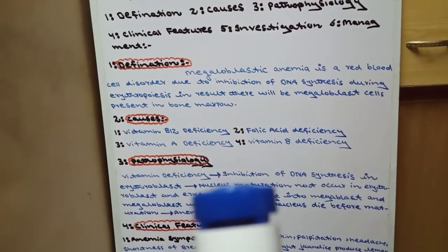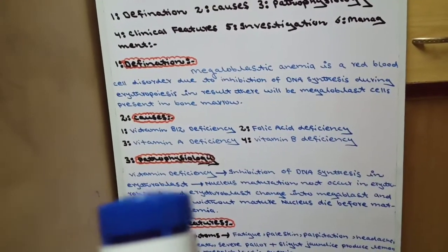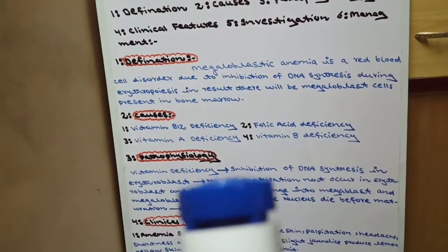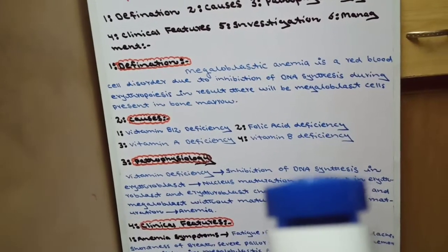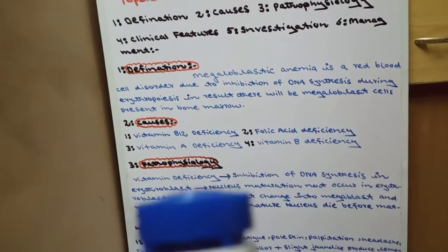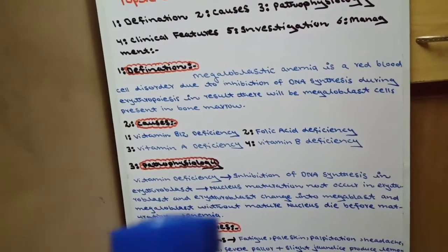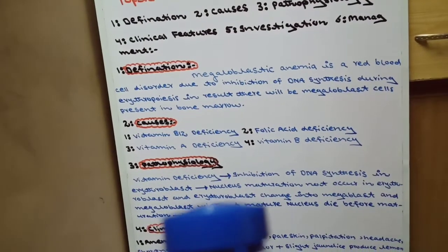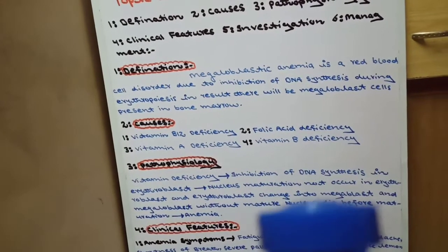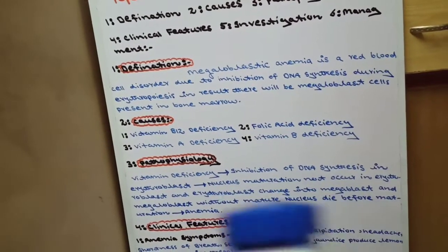Pathophysiology kya hai? In vitamins ki deficiency hoti hai, toh DNA synthesis jo erythroblast ke andar hoti hai — erythroblast jo erythrocyte ka precursor hai — us ke andar vitamin ki deficiency ki wajah se DNA synthesis inhibit ho jati hai. Jab DNA synthesis inhibit hogi, toh nucleus ki maturation erythroblast ke andar nahi hogi, aur woh erythroblast megaloblast mein change ho jata hai.